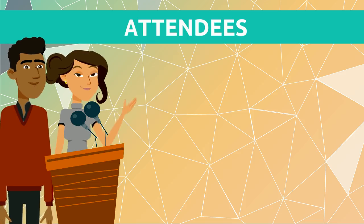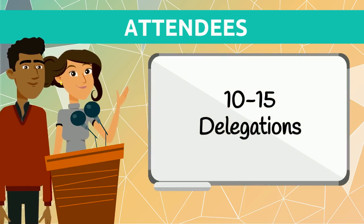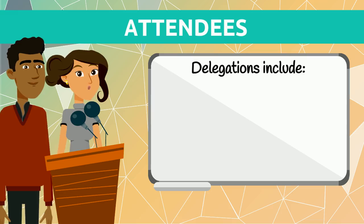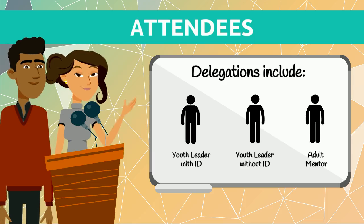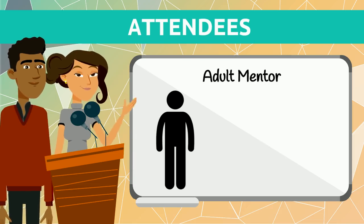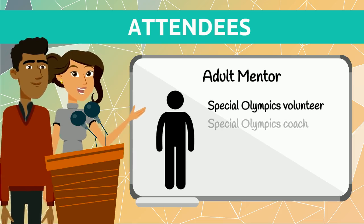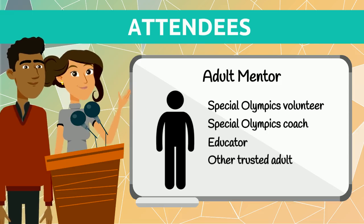The program-level Youth Leadership Summit should aim to have 10 to 15 delegations participate. A delegation includes one youth leader with an intellectual disability, one youth leader without an intellectual disability, and an adult mentor. The adult mentor can be a Special Olympics volunteer, coach, educator, or other trusted adult that will support the youth leaders.